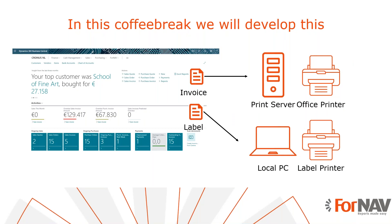Today we're going to print Business Central reports directly. There are three ways of direct printing with Fornav: direct print via the Fornav print service on a print server, direct print on your own computer, and direct print to a network printer connected to an on-premise Business Central server. In our previous coffee break we discussed installing and configuring the Fornav direct print service on a print server. Today we will discuss setting up direct printers in Business Central, and this setup is the same for all three types of direct printing.